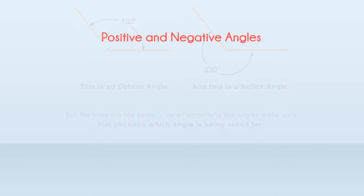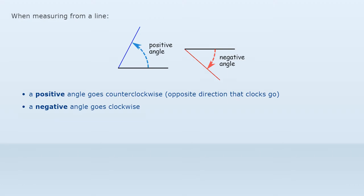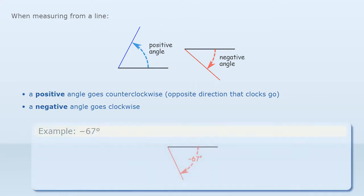Positive and Negative Angles. When measuring from a line, a positive angle goes counterclockwise, opposite direction that clocks go. A negative angle goes clockwise. Example, this angle is minus 67 degrees.